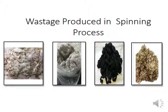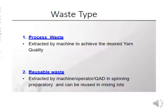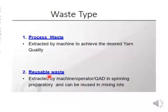Depending on the sources of waste, the process, and the end use of the waste, there are various classifications. Mainly, waste can be classified into two groups: process waste and reusable waste. There may be other classifications also, such as hard waste and soft waste.